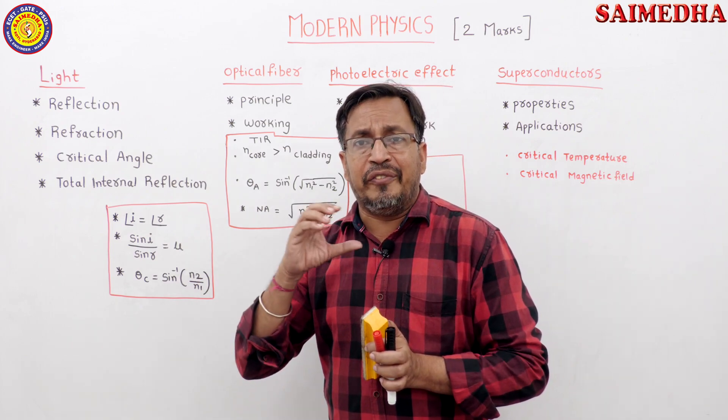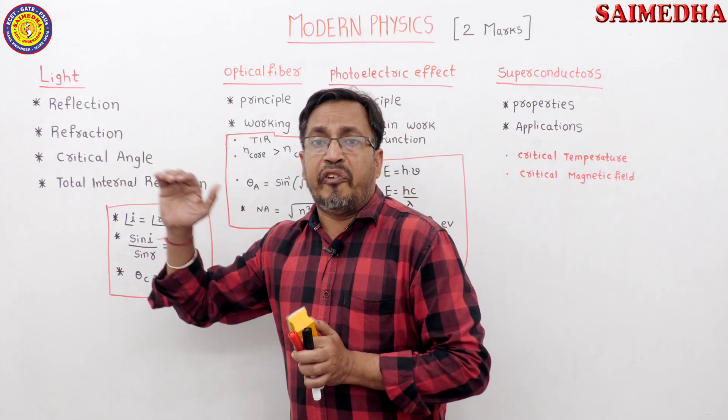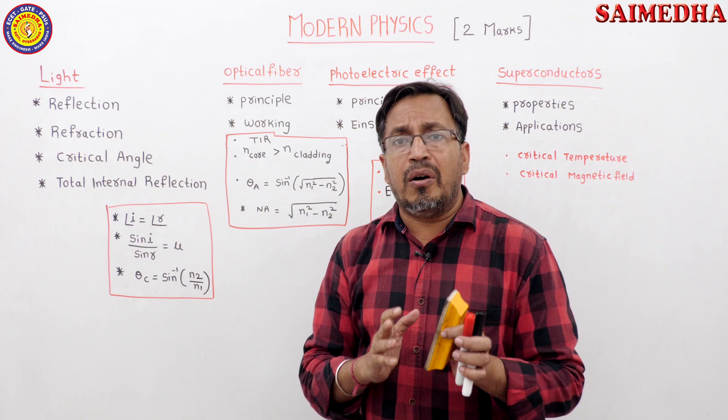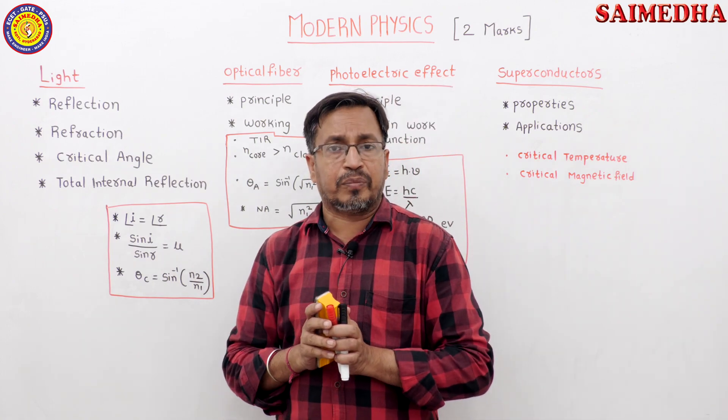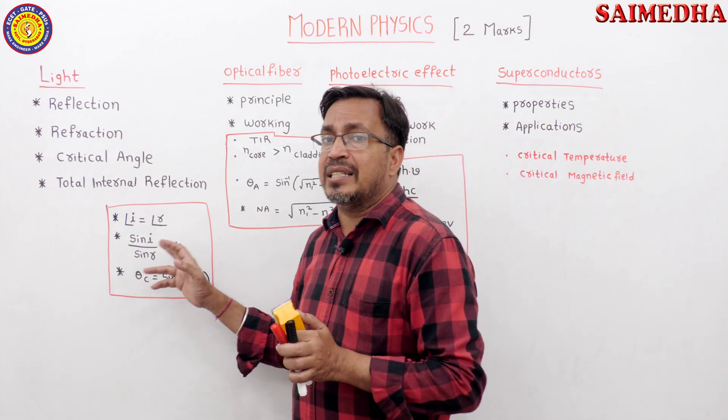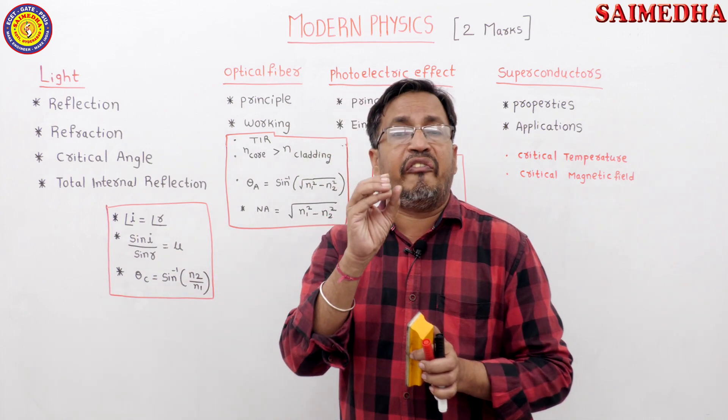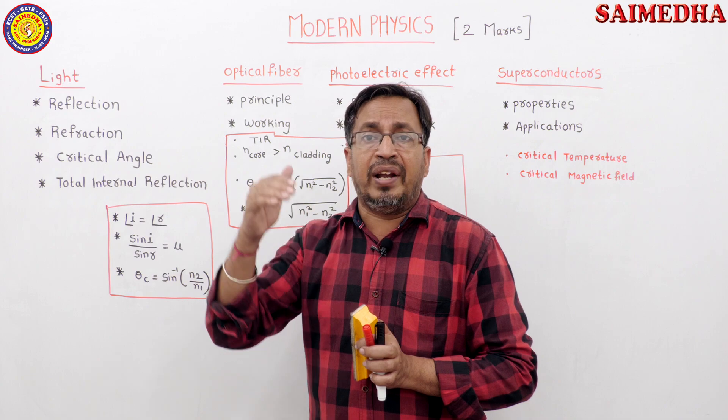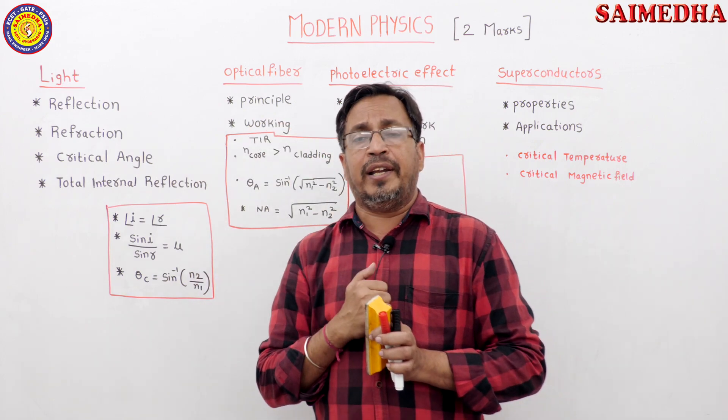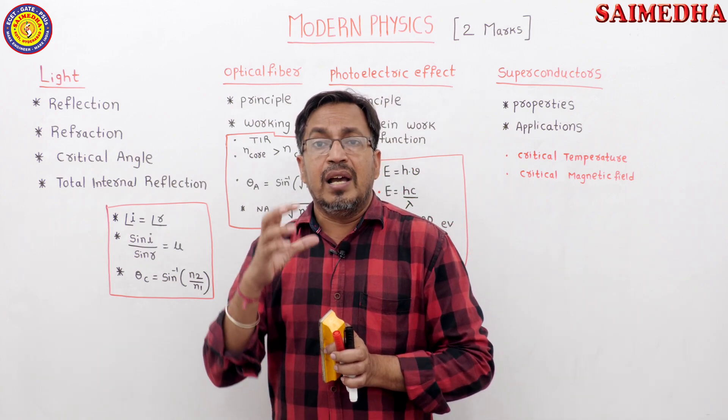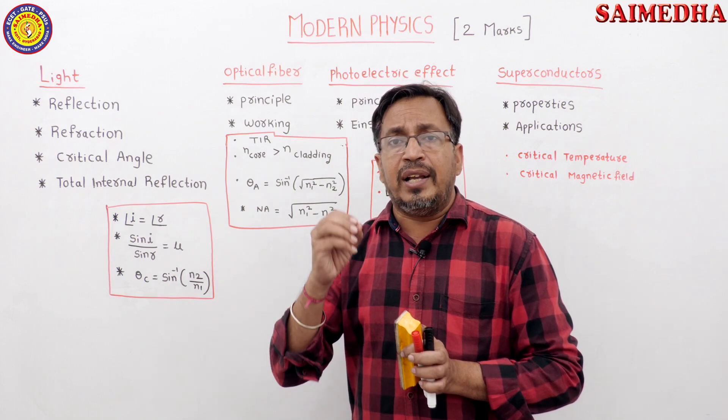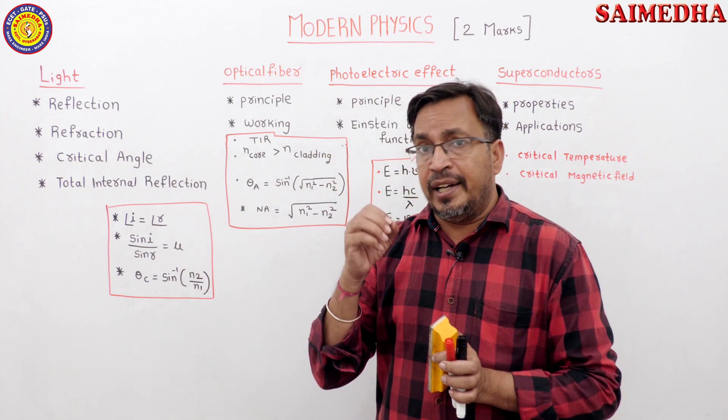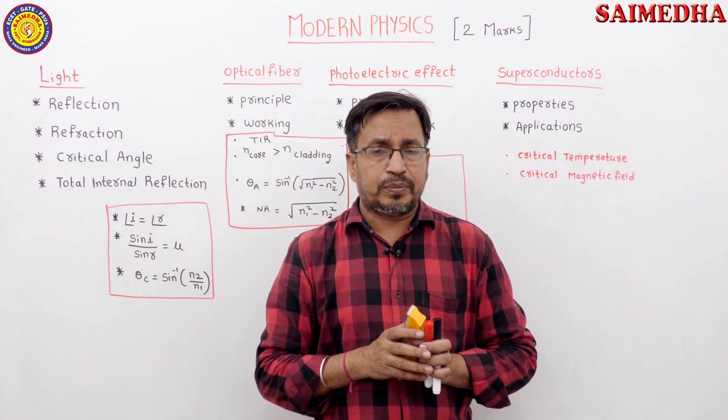In reflection, angle of incidence equal to angle of reflection. In refraction, sin i by sin r equal to mu, where mu is refractive index. These are very easy questions.